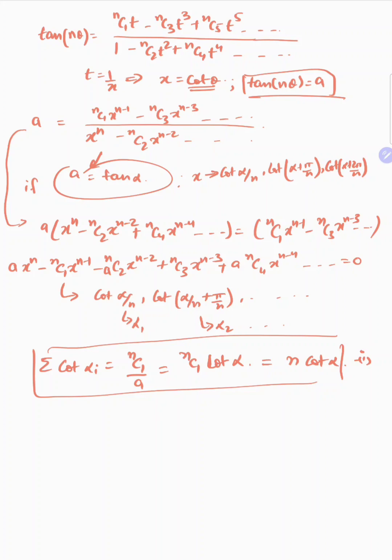So: cot(α/n) + cot(α/n + π/n) + cot(α/n + 2π/n) + cot(α/n + 4π/n) + ... and so on, till n terms, is equal to n times cot α. I have written alpha carefully, so α/n + π/n, α/n + 2π/n, and so on.